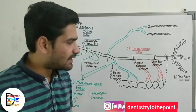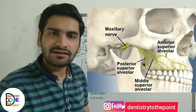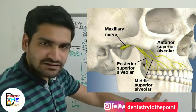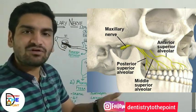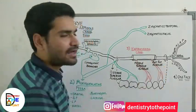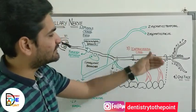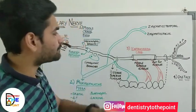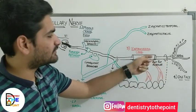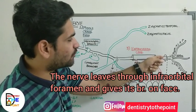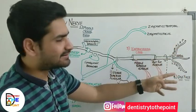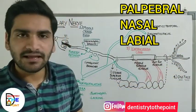The anterior superior alveolar branch supplies the upper central incisors, lateral incisors, and canine, along with the maxillary sinus and the anterior inferior aspect of the nasal cavity. After exiting the infraorbital canal, the nerve crosses the infraorbital foramen and comes onto the face, giving three branches: palpebral, nasal, and labial.